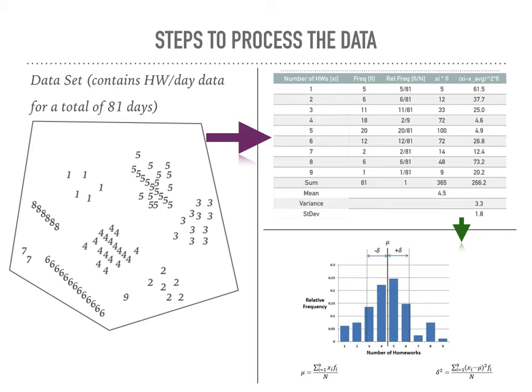You just take the frequency and divide it by the total number of data points. Xi times fi is crucial in calculating the average, and (xi minus x̄)² times fi is crucial in calculating the variance and standard deviation.